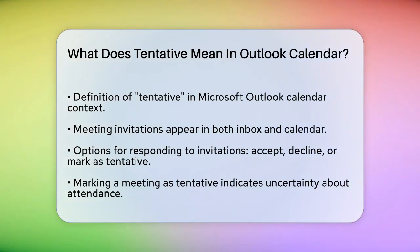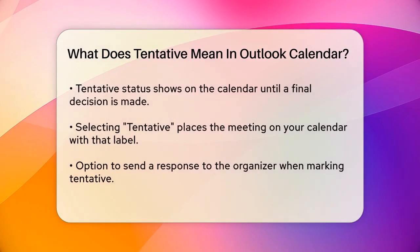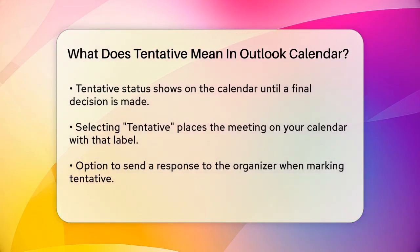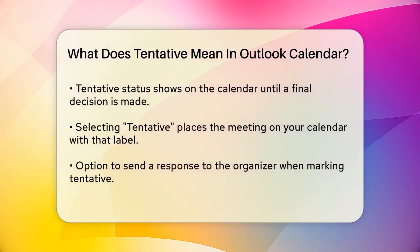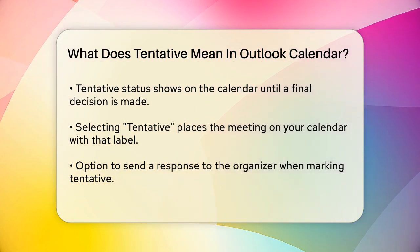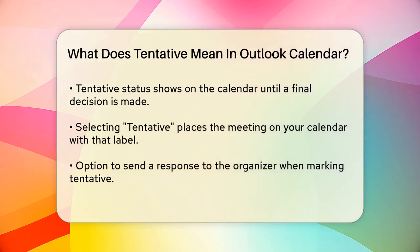Marking a meeting as tentative means that you are not sure if you can attend the meeting. This response indicates to the meeting organizer that you may be able to attend, but you are not committing to it yet.